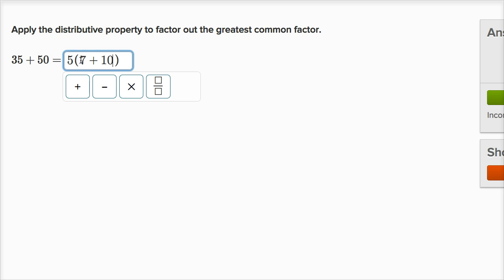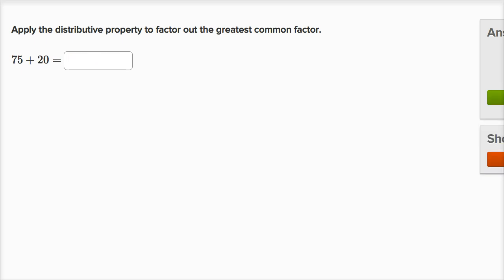And you know you factored out the greatest common factor, because seven and 10 don't have any factors in common anymore. They're called relatively prime. They have no factors in common other than one. So we could now check that. Let's do a couple more of these.